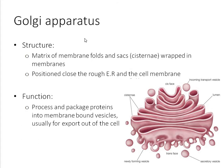Next, the Golgi apparatus. Structurally, it is a matrix of membrane folds and sacs called cisternae, wrapped in other membranes. We've got our cis-facing side which usually faces the endoplasmic reticulum. It's positioned close to the rough ER and the cell membrane. Functionally, it processes and packages proteins from the rough ER. When we say package, we mean they are wrapped in membrane-bound vesicles, which are usually exported out of the cell — 99% of the time. These vesicles are filled with proteins from the rough ER and exported outside the cell.